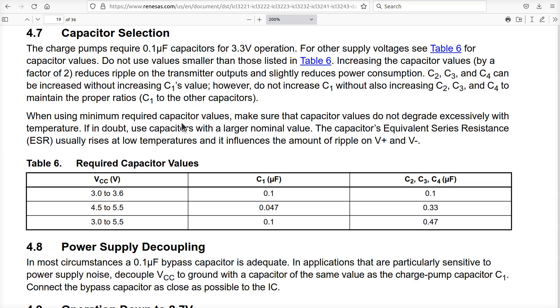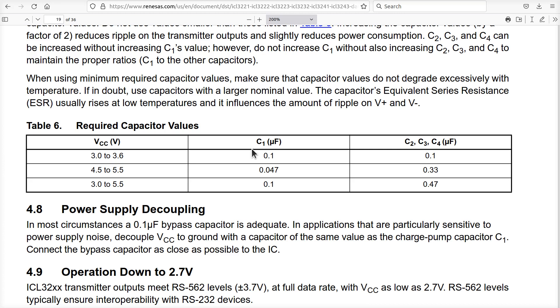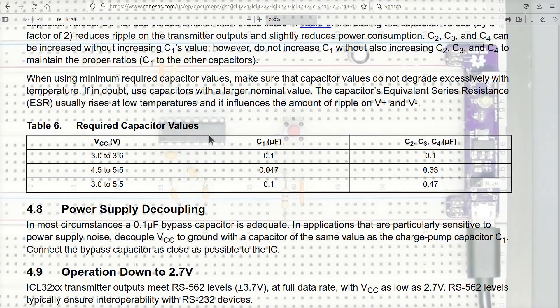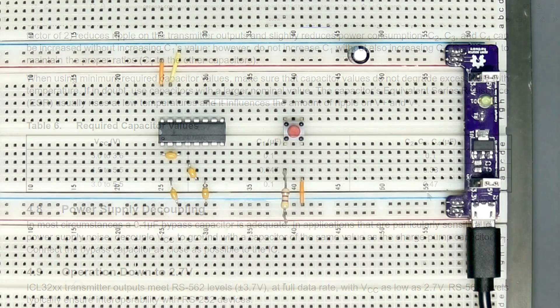Which maybe they talk about elsewhere in the document. There is a ratio that we need to make sure is okay. When using the minimum values, make sure that it doesn't degrade with temperature. We're pretty good with these ceramic jobbies. So let's head over to the scope and see what happens with the wrong cap on there and let's see what the difference is if we put the right one on there.